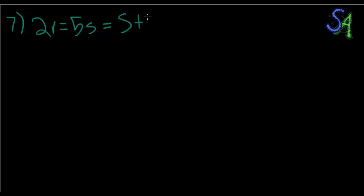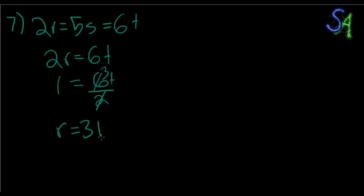So in this case, if 2R equals to 5S and 5S equals to 6T, then 2R is equal to 6T. Therefore R is equal to 6T divided by 2, which is equal to R being equal to 3T. And that is choice C.